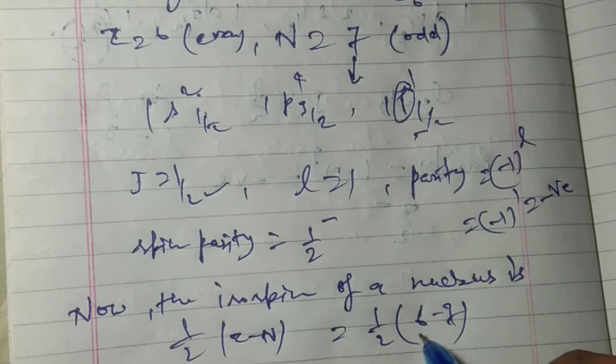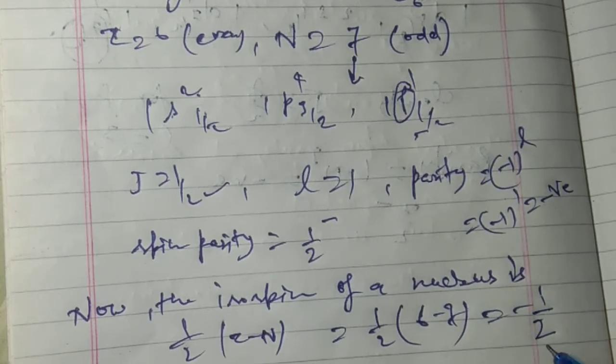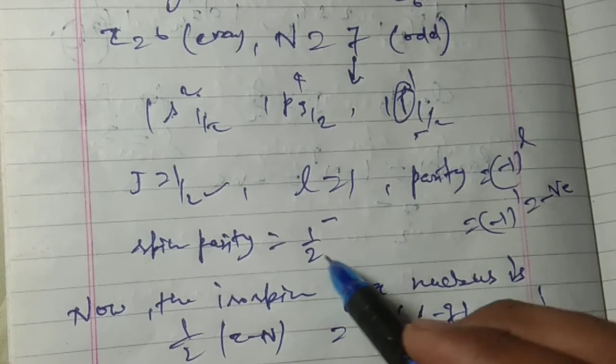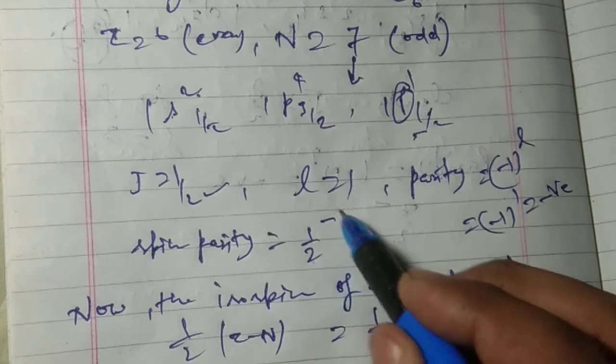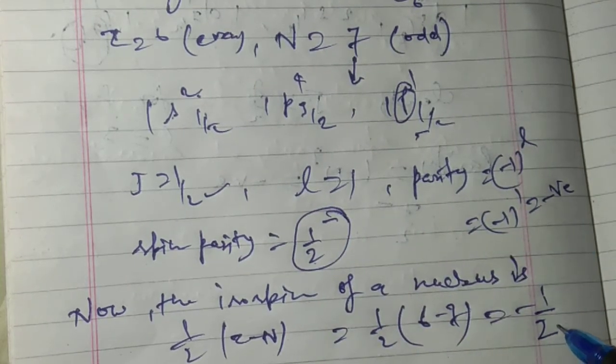1/2 |6 - 7|, where 6 is the number of protons and 7 is the number of neutrons. This gives 1/2. So the spin-parity is 1/2⁻ and the isospin is 1/2.